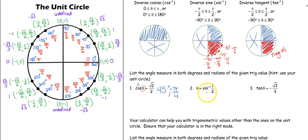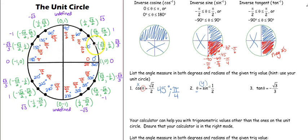For inverse sine, if I'm looking for an angle measure it's the inverse sine of that value. I'm looking for what y-value gives a positive 1/2 — positive means I'm going up. A y-value of positive 1/2 occurs at 30° and also at 150°. For inverse sine I choose the value in quadrant 1 or quadrant 4, so I can't choose the one in quadrant 2 (150°). I choose the one in quadrant 1: 30°, which gives us π/6.